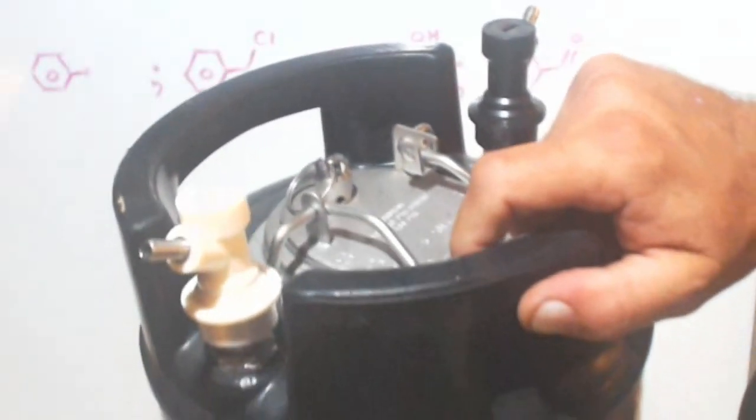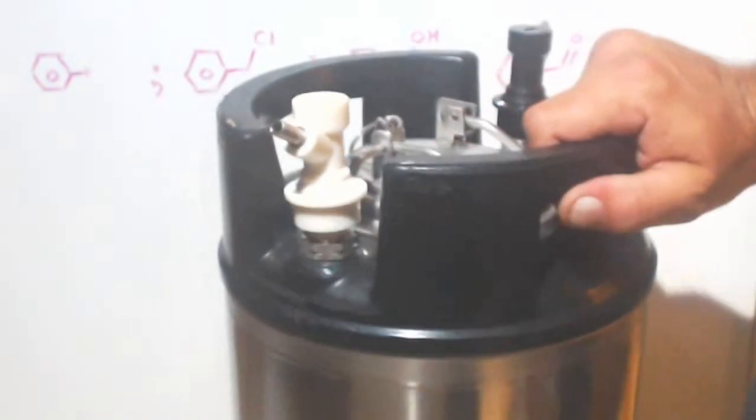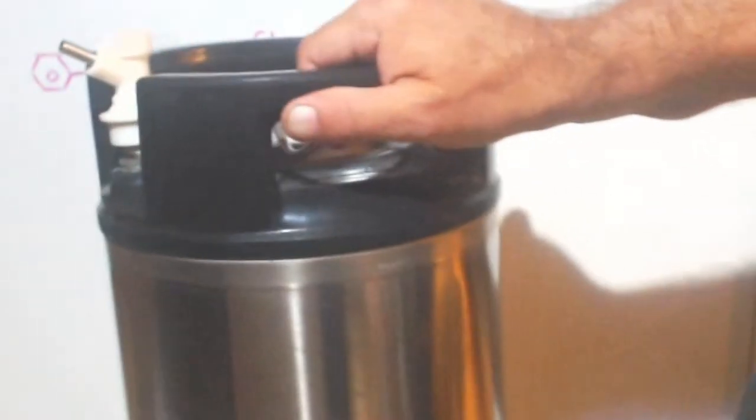But this is actually cheaper because you can get one of these used for 40 bucks, 50 bucks. You can get a brand new one, it's Cornelius keg for carbonating drinks. You can get a brand new one for like 75 bucks probably. I'm just guessing.